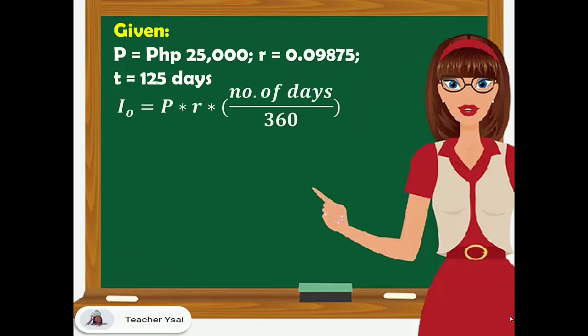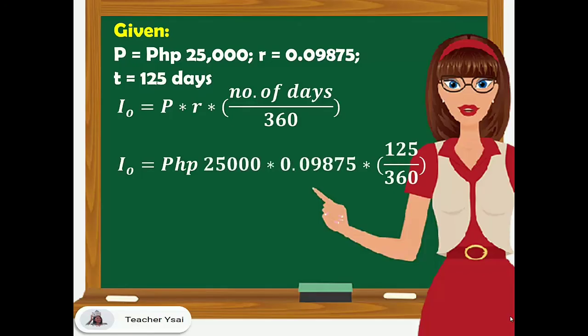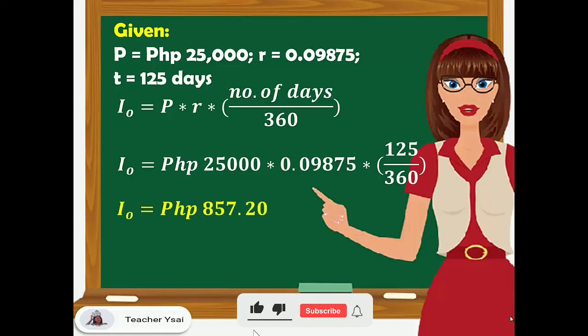The problem is asking for the ordinary interest, so we have the formula P times R times number of days over 360. Substituting the given, we have 25,000 pesos for P times 0.09875 for R times 125 for the number of days over 360. Simplifying this equation, we have our ordinary interest equal to 857 pesos and 20 centavos.